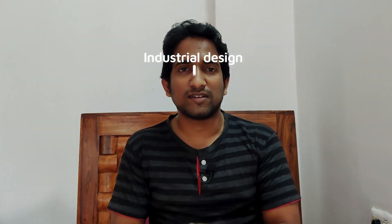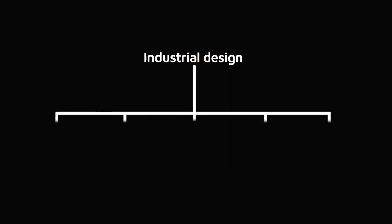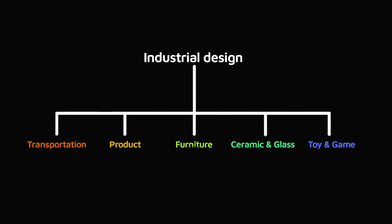Industrial designers have explored many different fields. Product design is a subset of industrial design. Industrial design has many different facets — transportation design, furniture design, product design, toy and game design — all as subsets of industrial design.